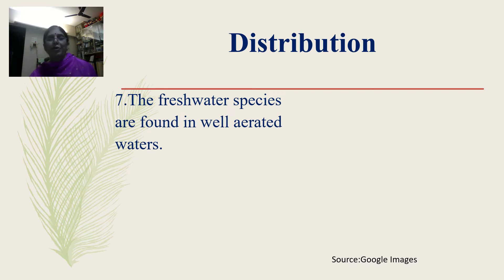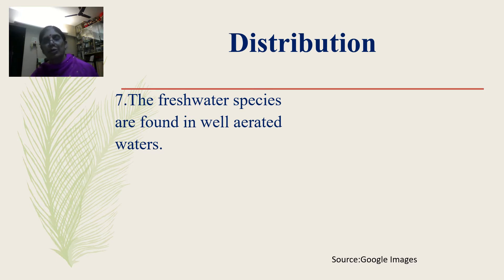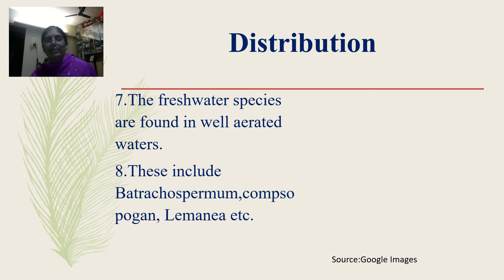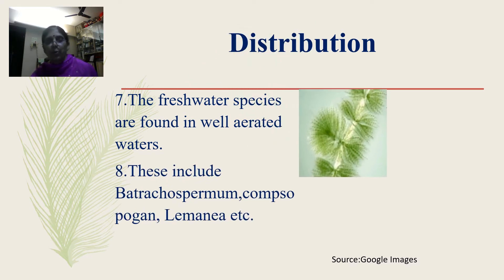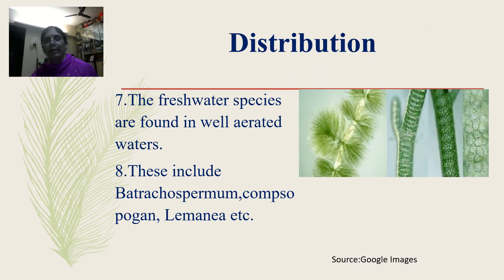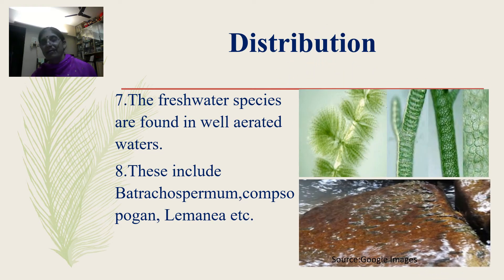Freshwater species are found in well-aerated waters. While the majority of species are marine, a few are freshwater dwellers. These include Batrachospermum, Compsopogon, and Lemanea. You can see here Lemanea growing on the surface of the rock.